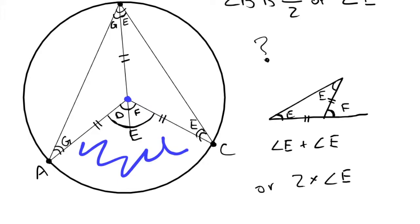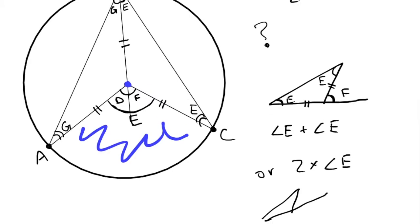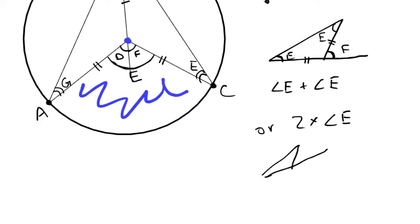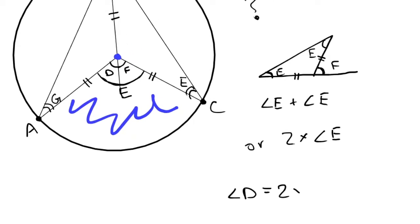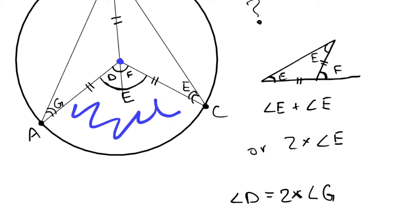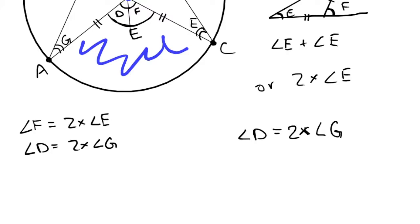It's the same thing for the other triangle. When we look at the other triangle, we notice that angle D is two times angle G. So the two things we've figured out are: angle F is two times angle E, and angle D is two times angle G. Now, angle E — the angle that subtends the entire sector from the center — is basically just angle D plus angle F. So we can say that angle E equals angle F plus angle D.